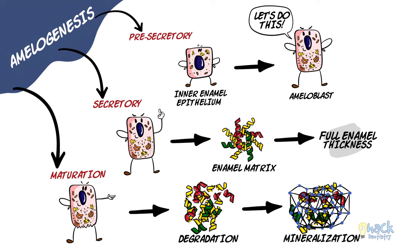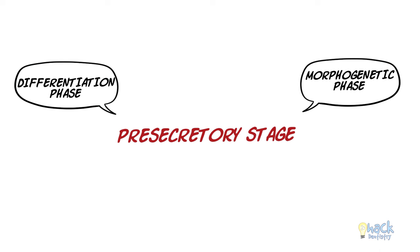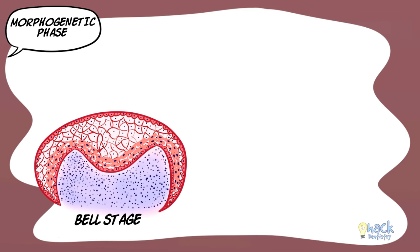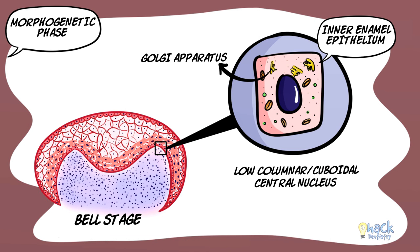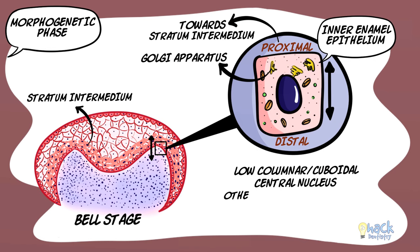The pre-secretory stage is further subdivided into two phases: the morphogenetic phase and the differentiation phase. In the morphogenetic phase, the enamel organ is in the bell stage of tooth development and the shape of the crown is established. The inner enamel epithelial cells are low columnar or cuboidal cells with a central nucleus. The Golgi apparatus is located in the proximal portion of the cell, towards the stratum intermedium, and the other cytoplasmic components are scattered across the cell.